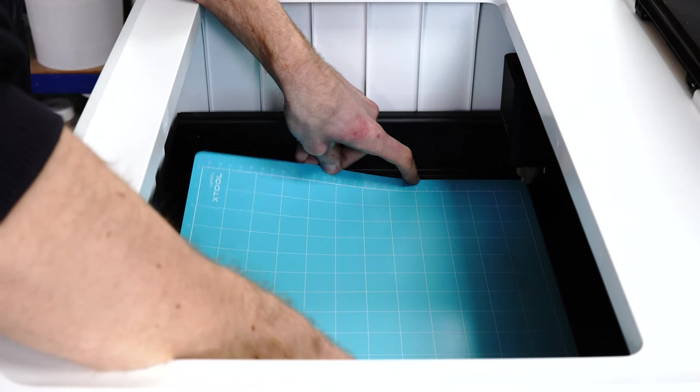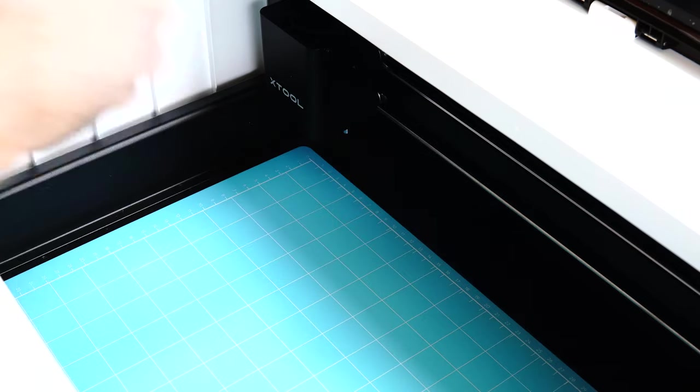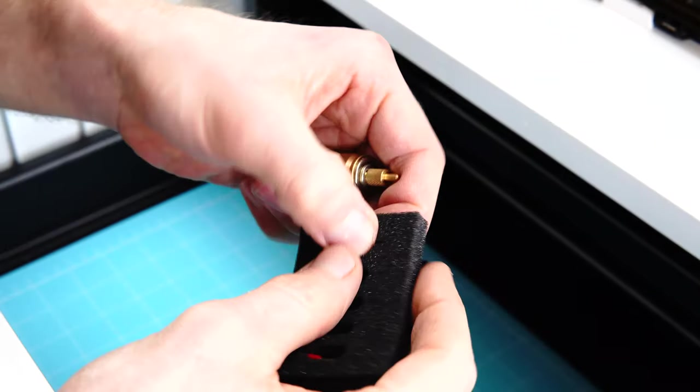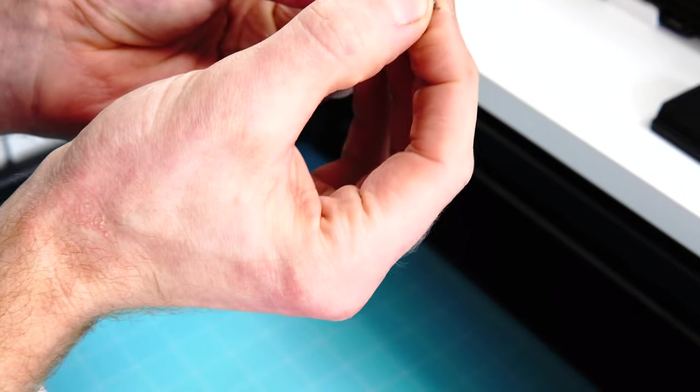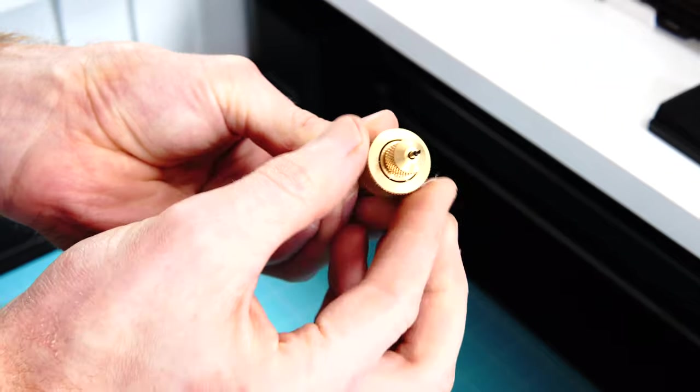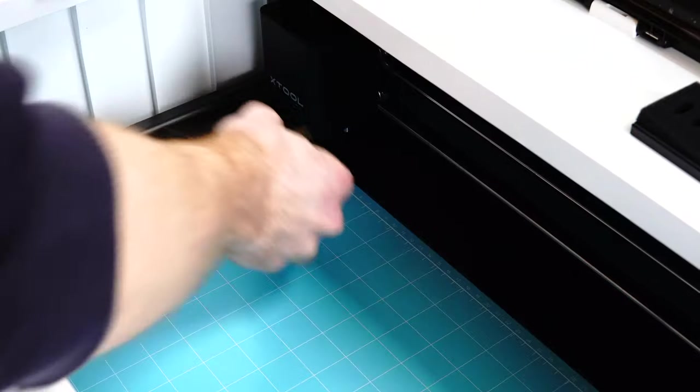The blade setup is very straightforward. You just drop a little magnetically attached blade in and they give you five blades as standard. Set the height correctly and then the whole thing magnets back into the bottom so then it's ready to cut.